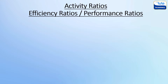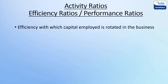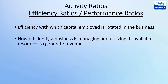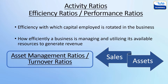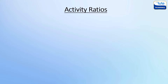So friends, let's first understand what are the activity ratios. Activity ratios, also termed as efficiency or performance ratios, indicate the efficiency with which the capital employed is rotated in the business — that is, how efficiently a business is managing and utilizing its available resources to generate the maximum possible revenue by comparing the sales figure with its assets. These are also called asset management ratios or turnover ratios, and they are generally expressed in times.